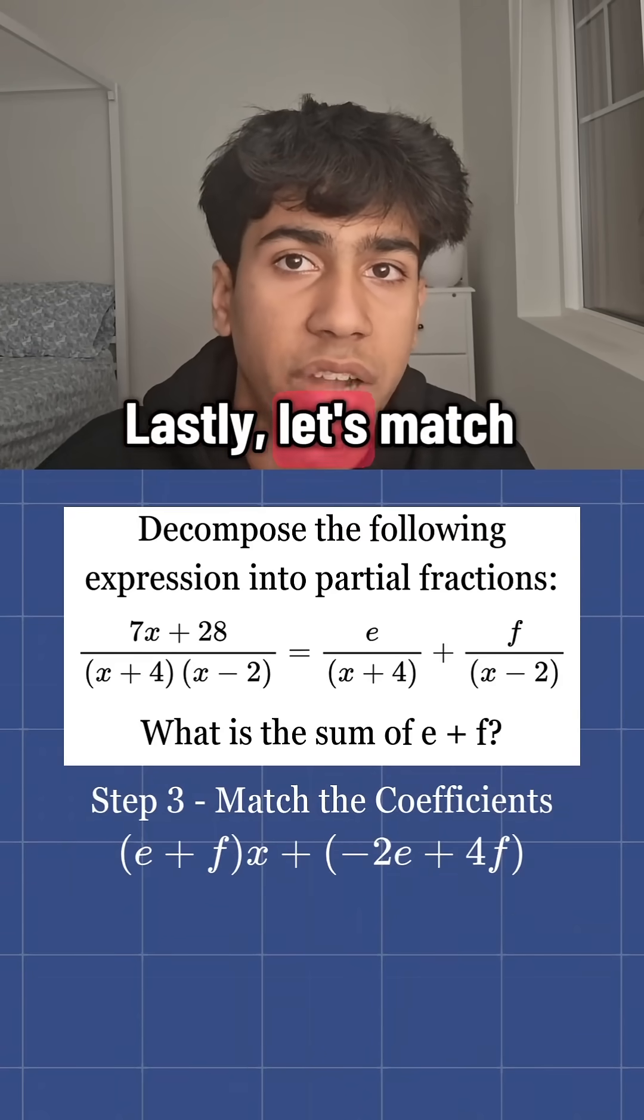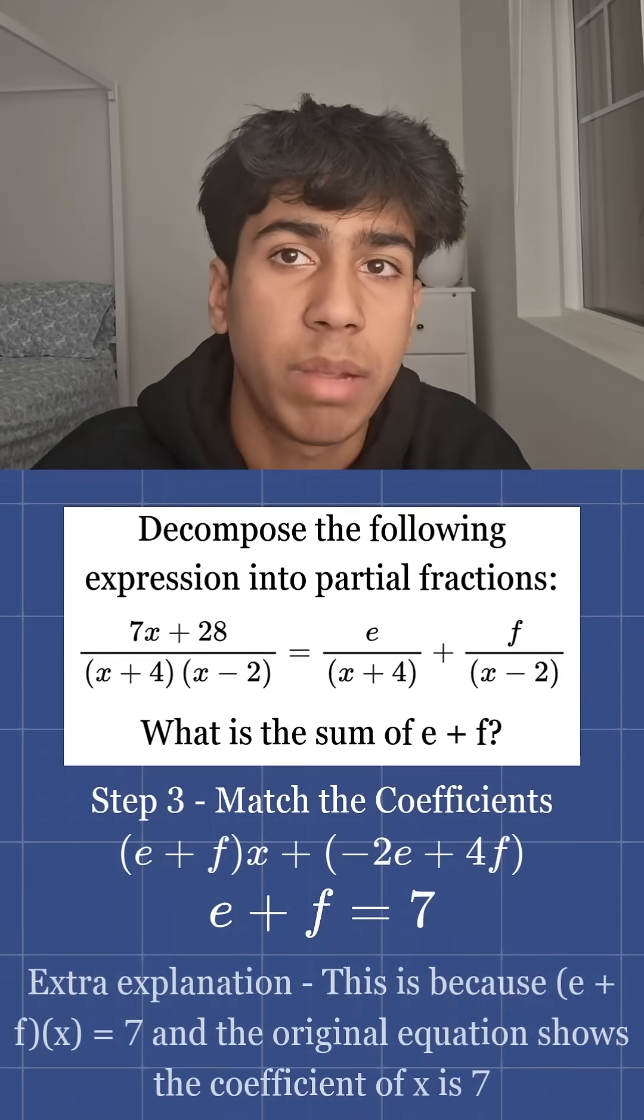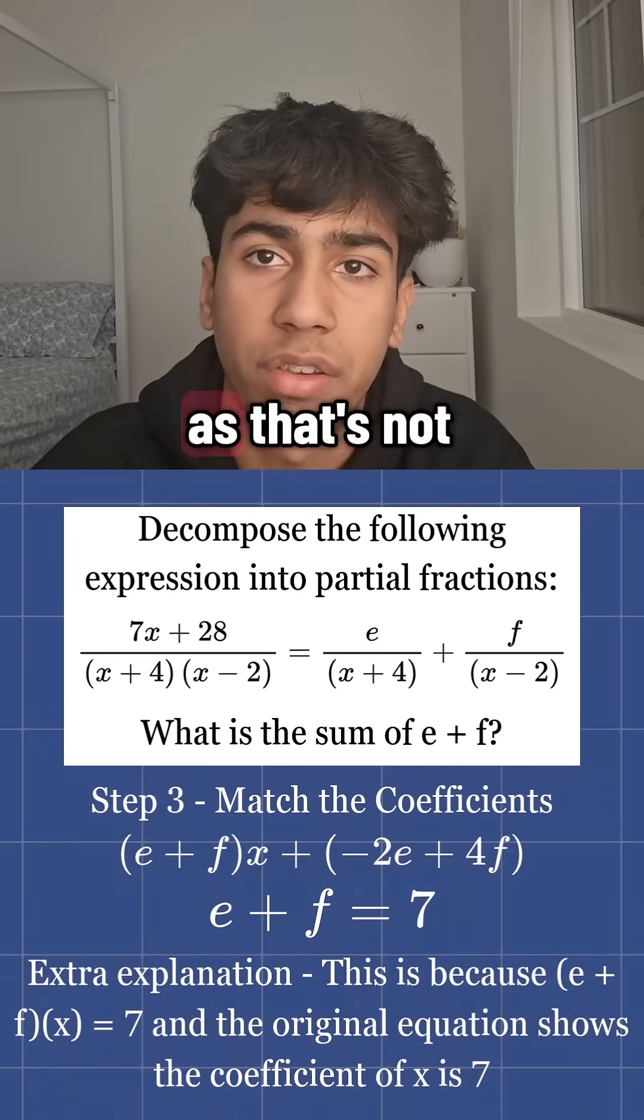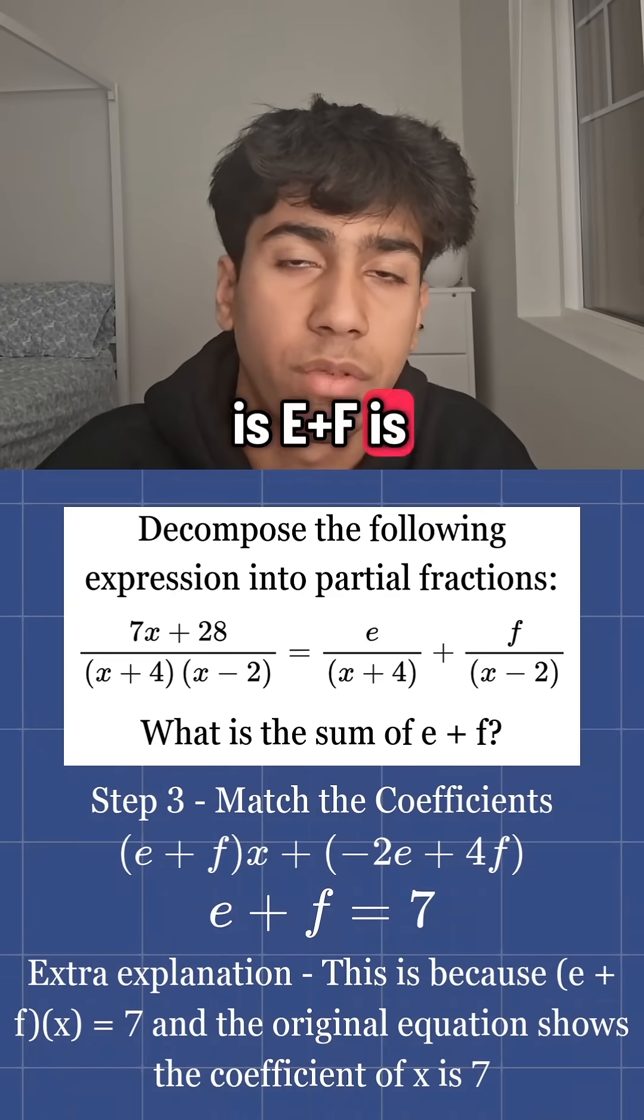Lastly, let's match it to the left side, which is 7x plus 28. So the x terms must match. E plus F is equal to 7. We could also match the constants, but we don't really need to as that's not what the question asks us to do. The final answer is E plus F is equal to 7.